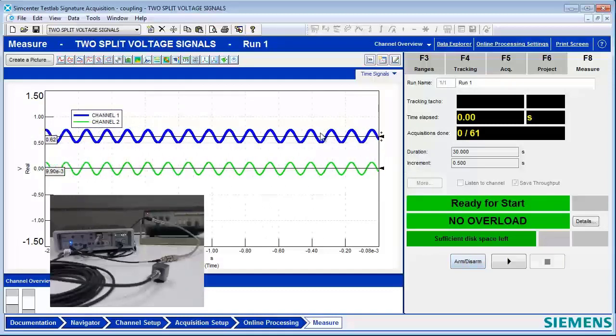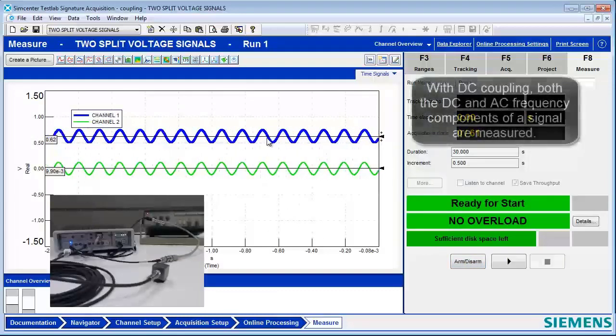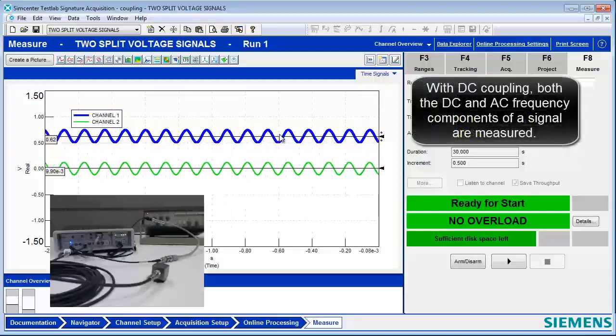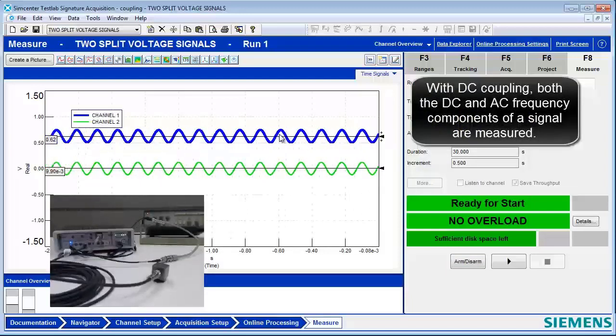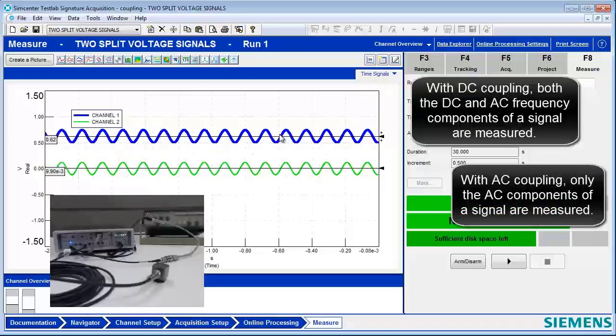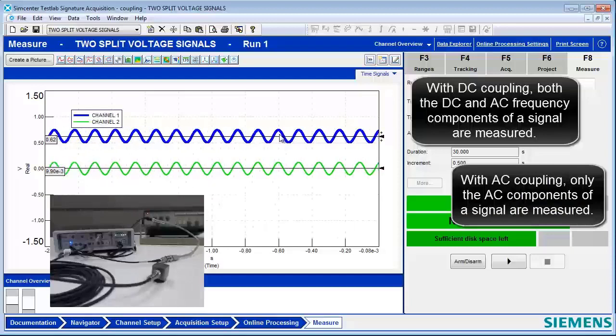So, wow. We've got one of the signals with DC coupling that still sees the DC offset and the fluctuating component, the AC. And what happened to the green one, Tom? The green one is only measuring AC.